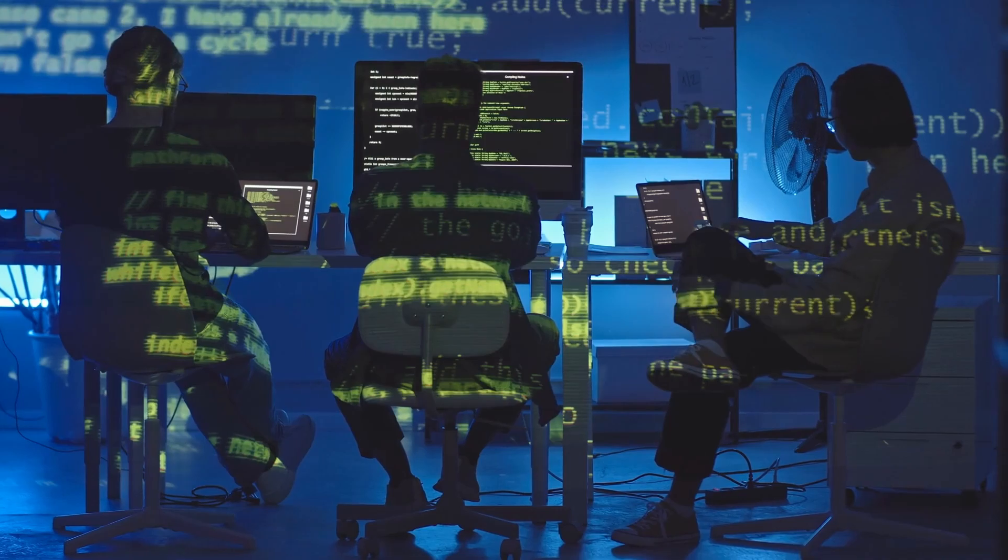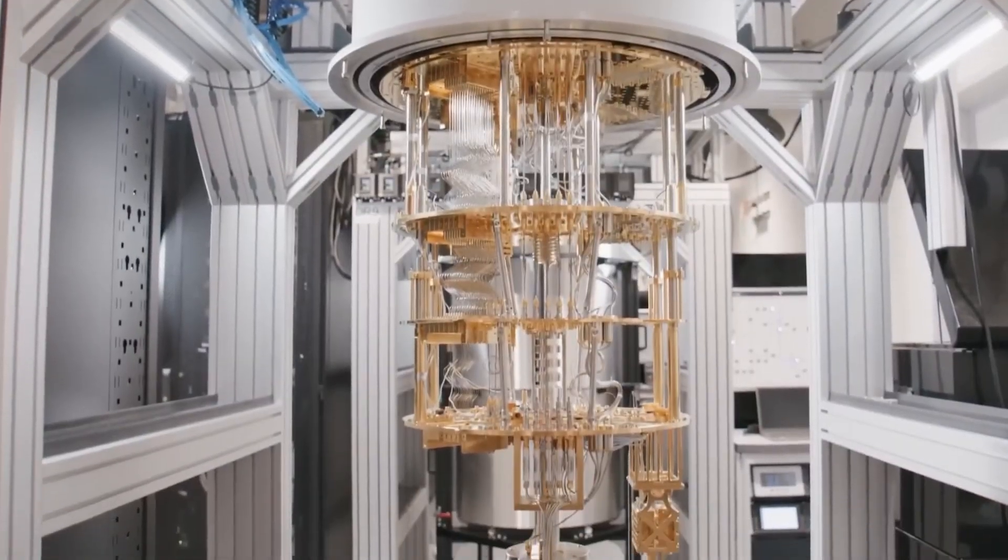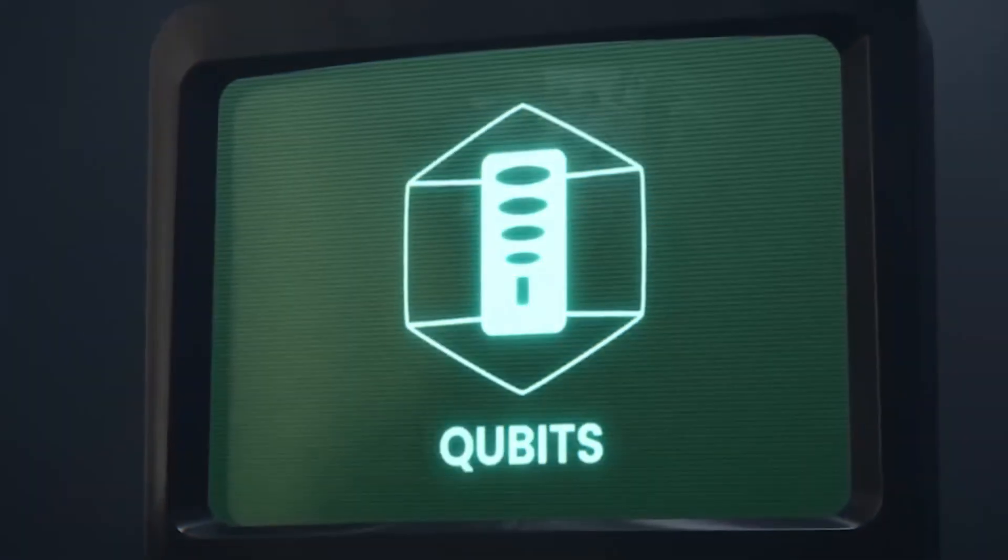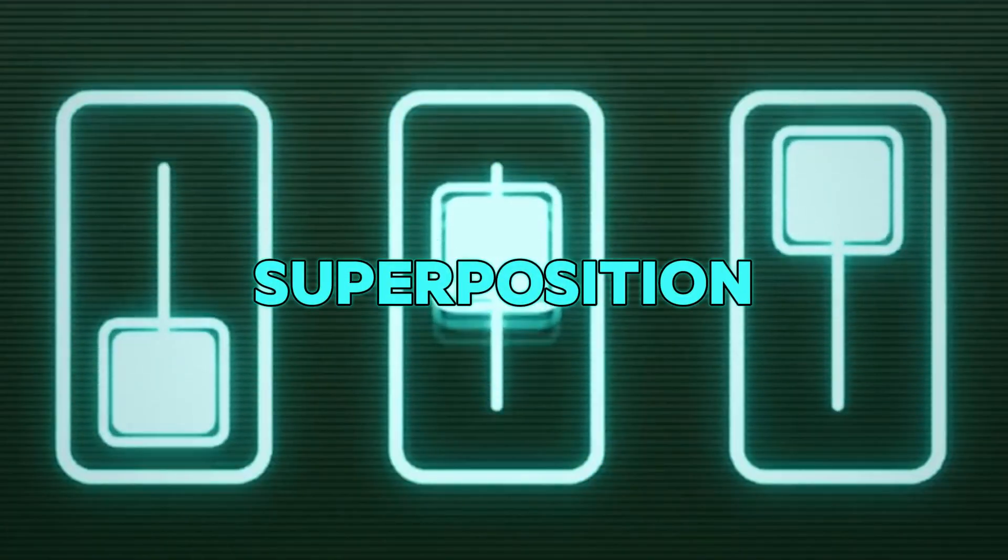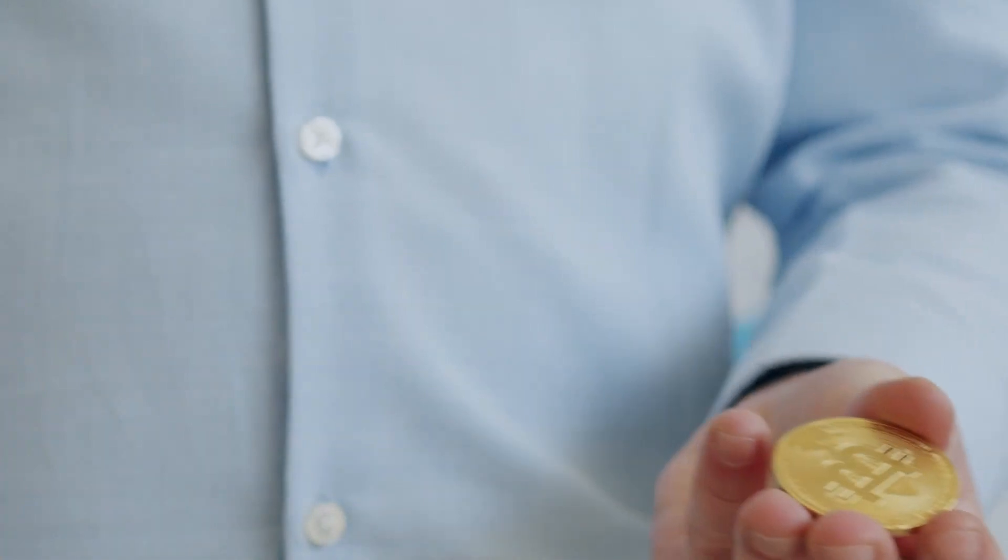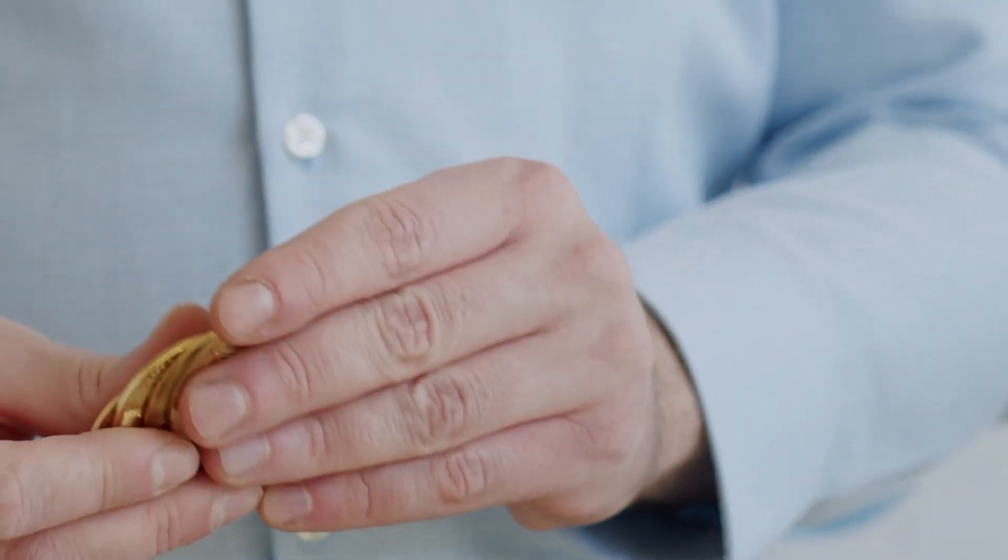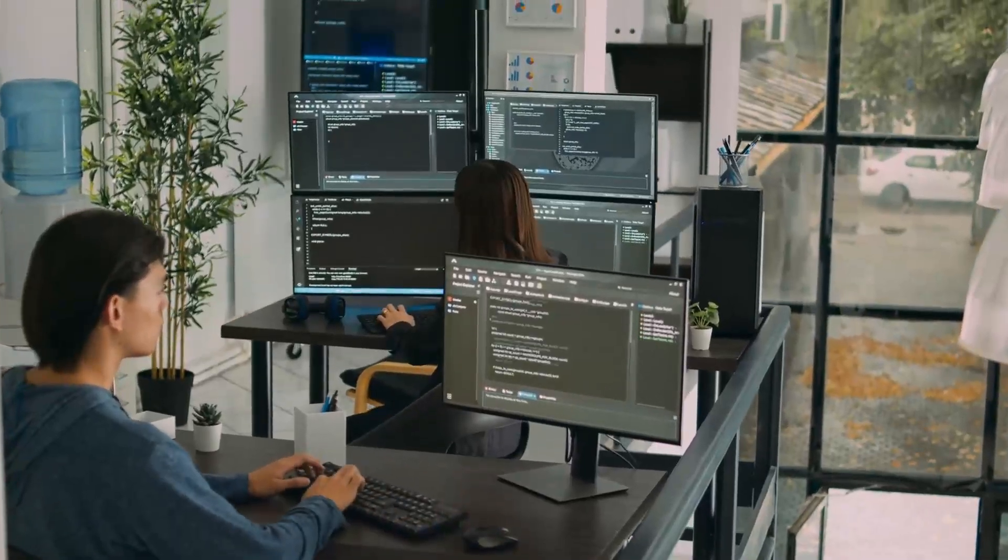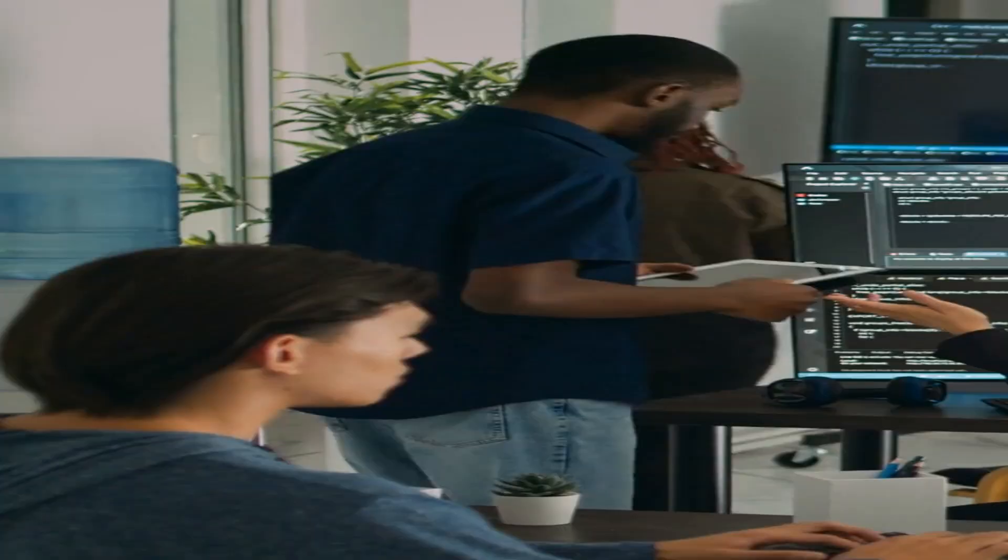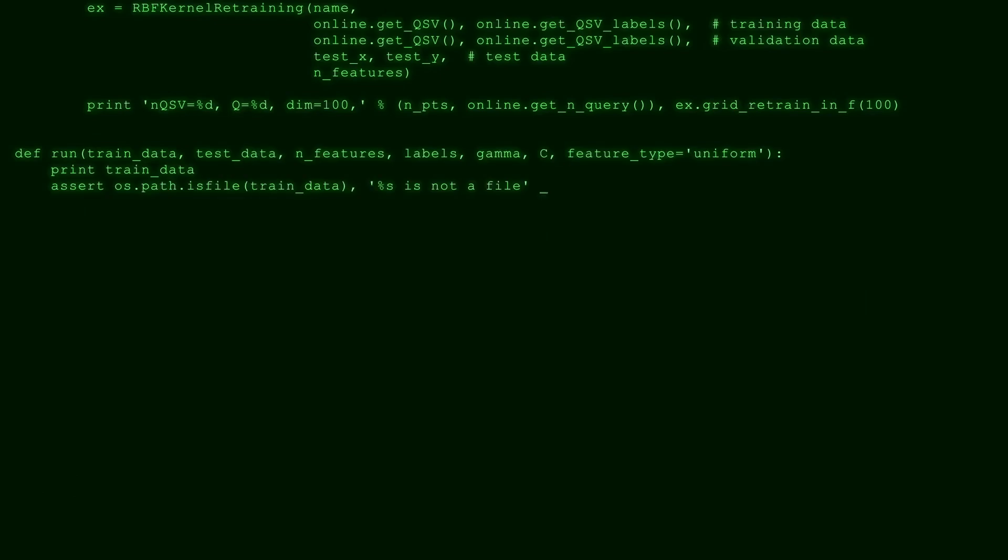Quantum computers, though, use something called qubits. And qubits? They're like magic. Because of a cool science trick called superposition, a qubit can be a zero and a one at the same time. Picture spinning a coin in the air. It's not just heads or tails. It's kind of both until it lands. This means quantum computers can try tons of answers all at once, making them super speedy for certain problems.